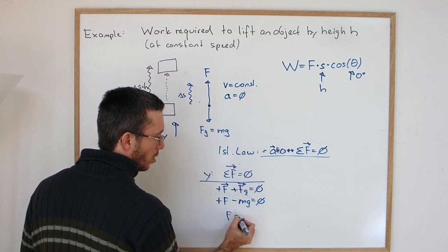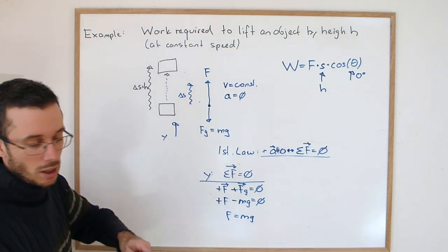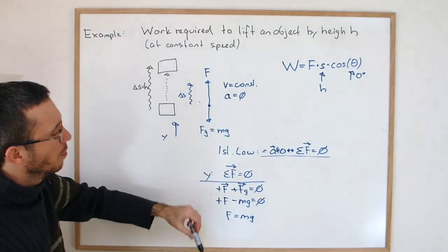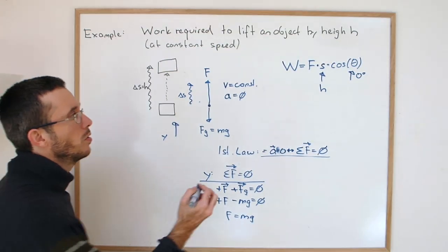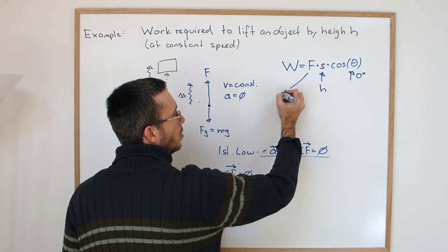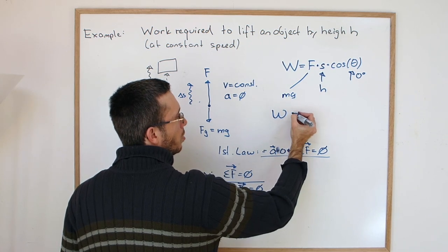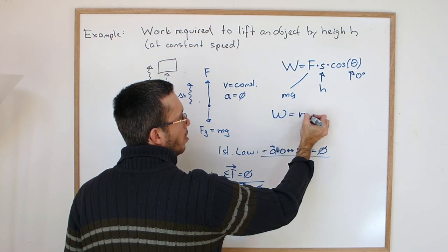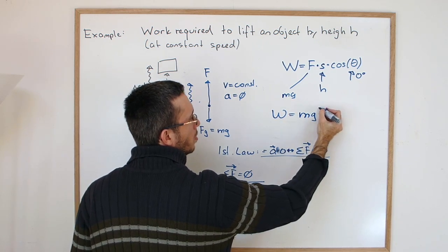So long story short, the force required to lift an object at constant velocity must be equal to gravity. So now I have it. F is mg. So the work required to lift it is mass times gravity times height.